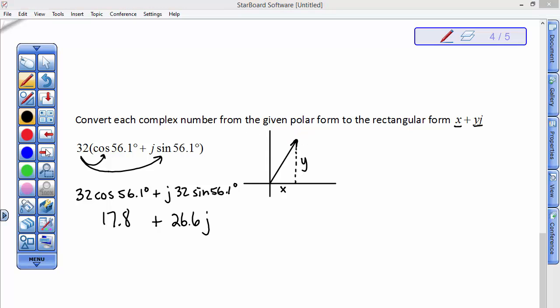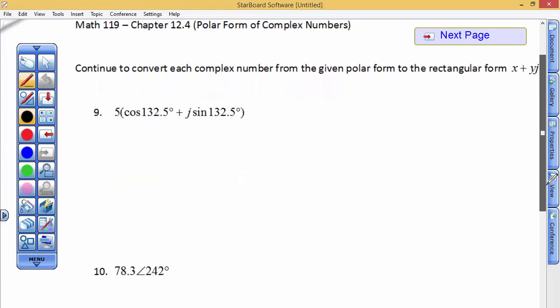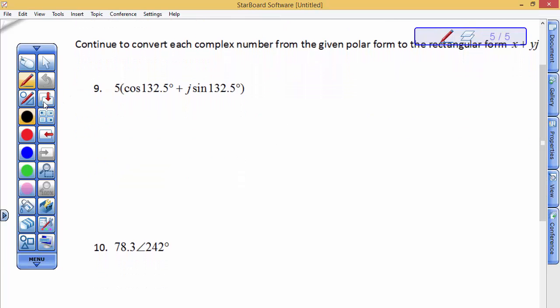So, here's an angle that's in the second quadrant. So, just to think about the signs of the complex number that you're working with, 132 degrees is almost bisecting this quadrant. So, this is 5 units in length right here.